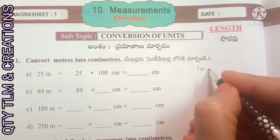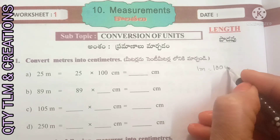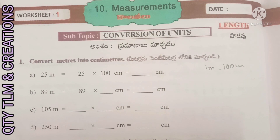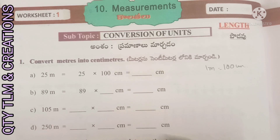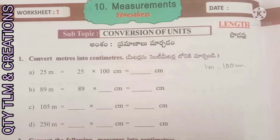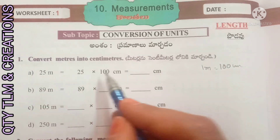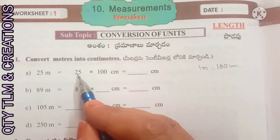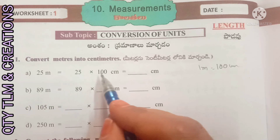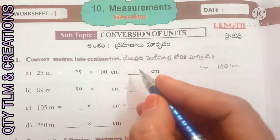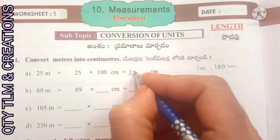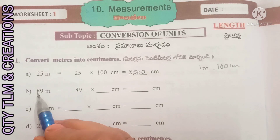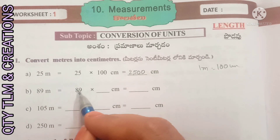While converting meters into centimeters, we have to multiply with one hundred. One meter equals one hundred centimeters. So 25 meters into one hundred centimeters equals 2,500 centimeters. Next, 89 meters: 89 meters into one hundred centimeters equals 8,900 centimeters.